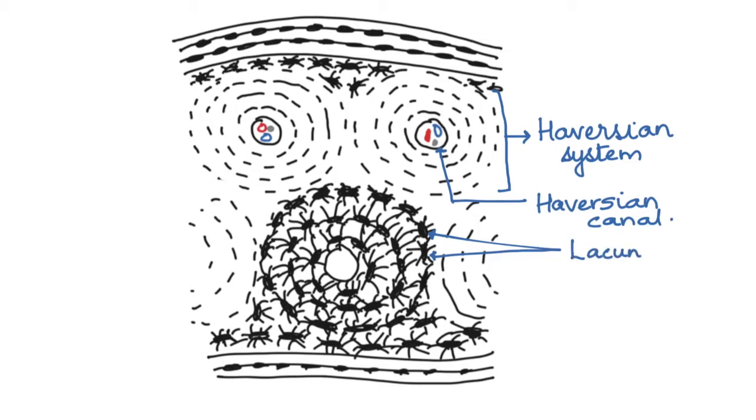Now the lacunae are arranged in a concentric manner in the matrix of the bone and these have osteocytes inside them.